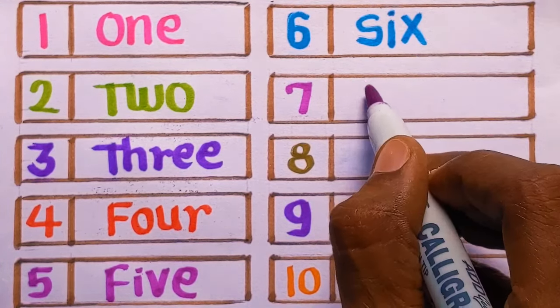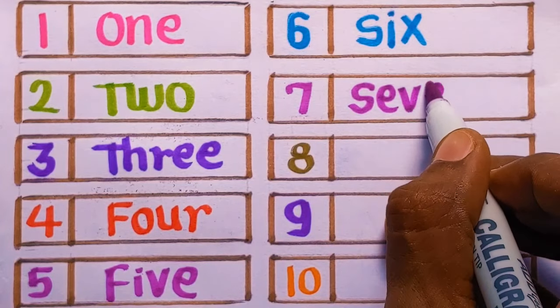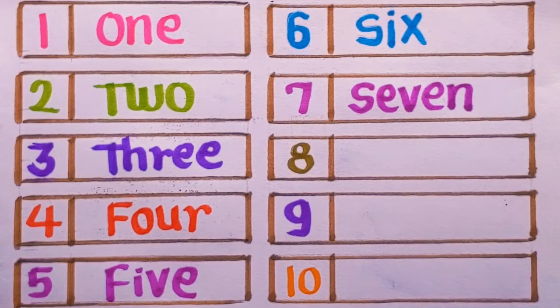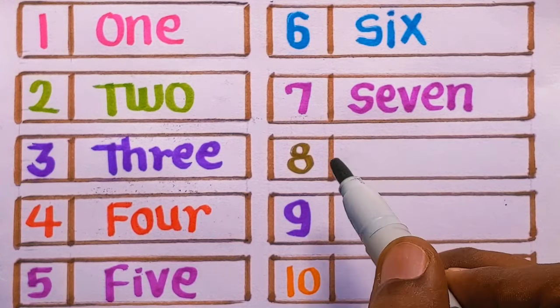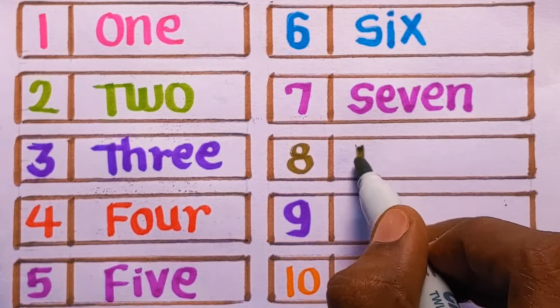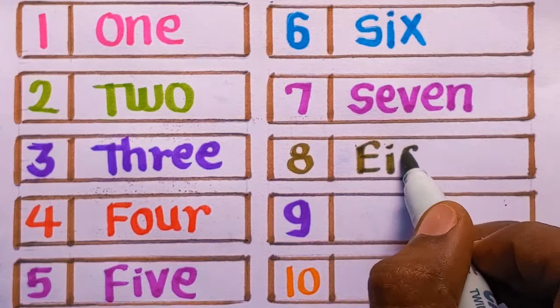Next is number seven: S-E-V-E-N, seven, purple color. After number seven, next is number eight: E-I-